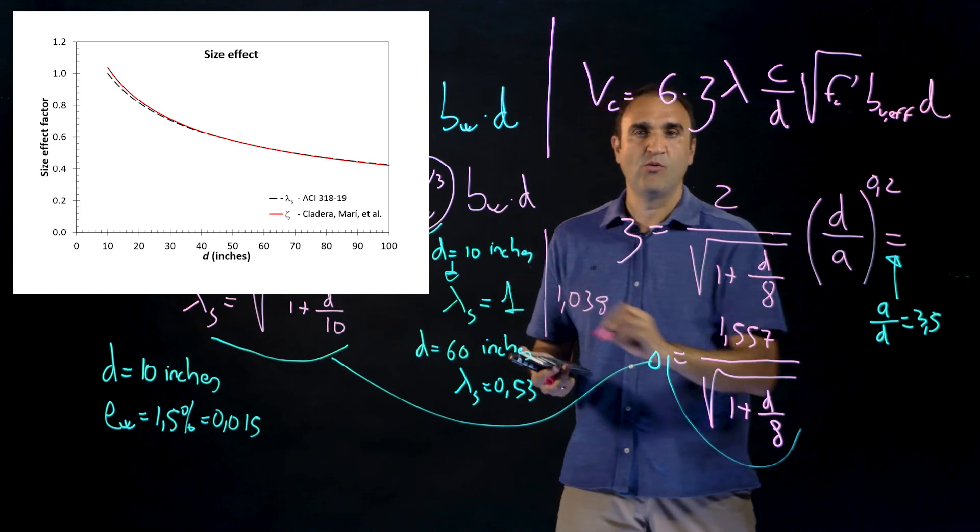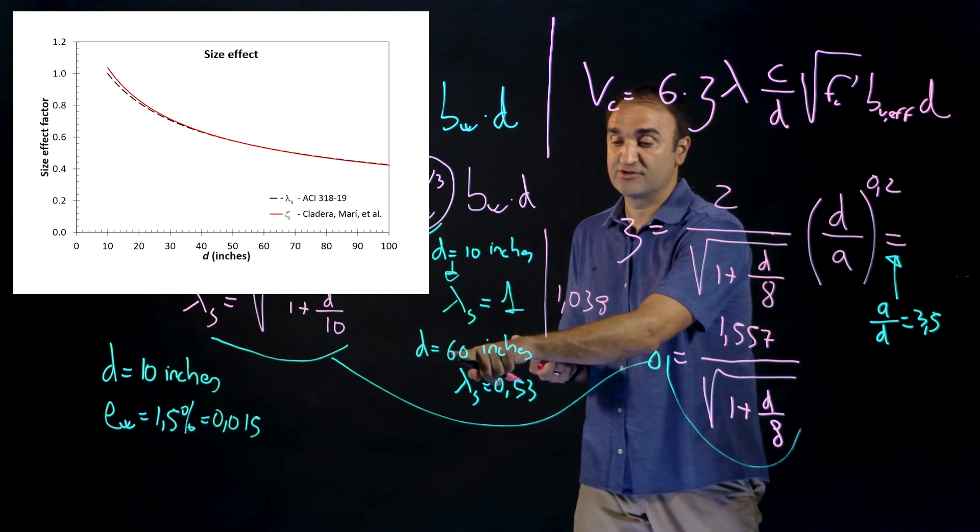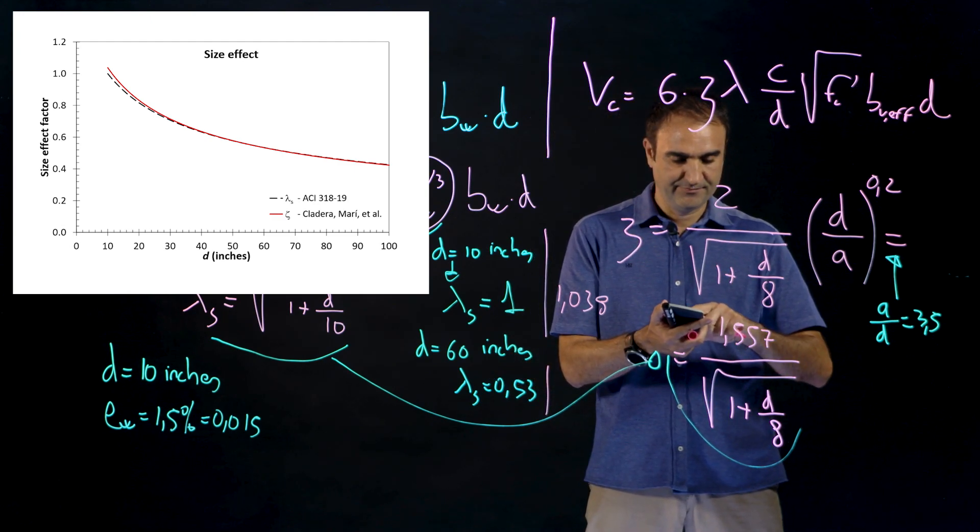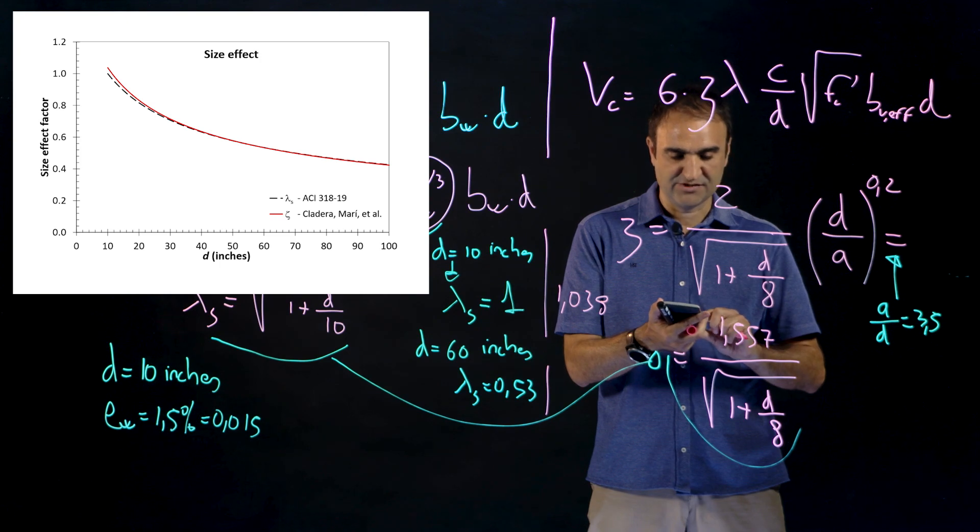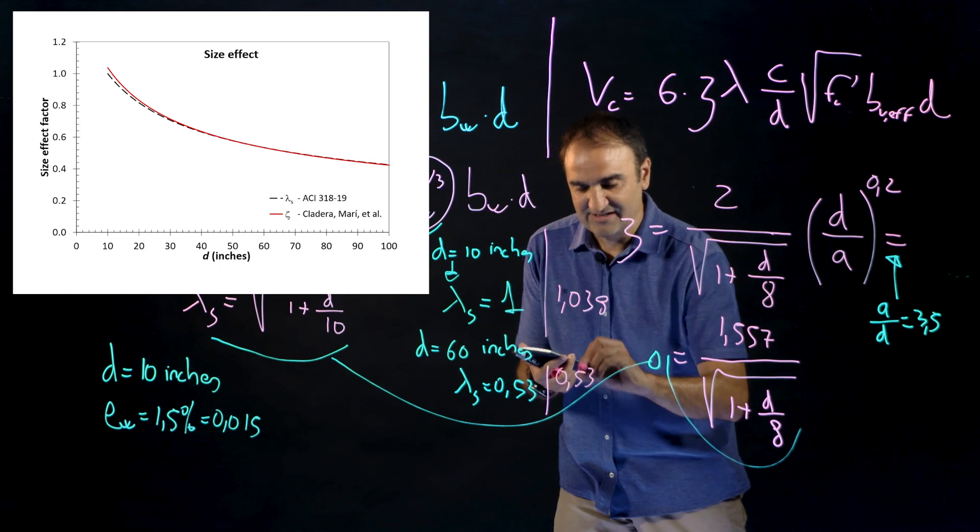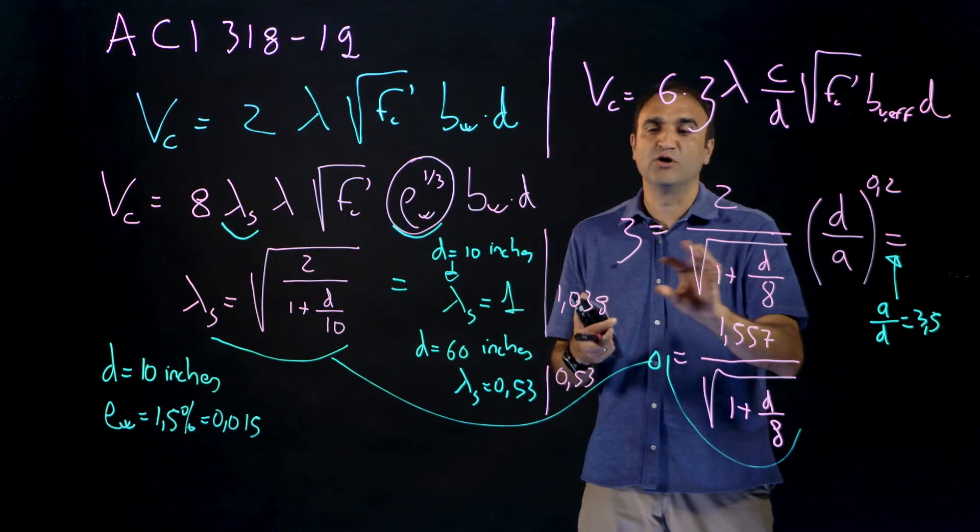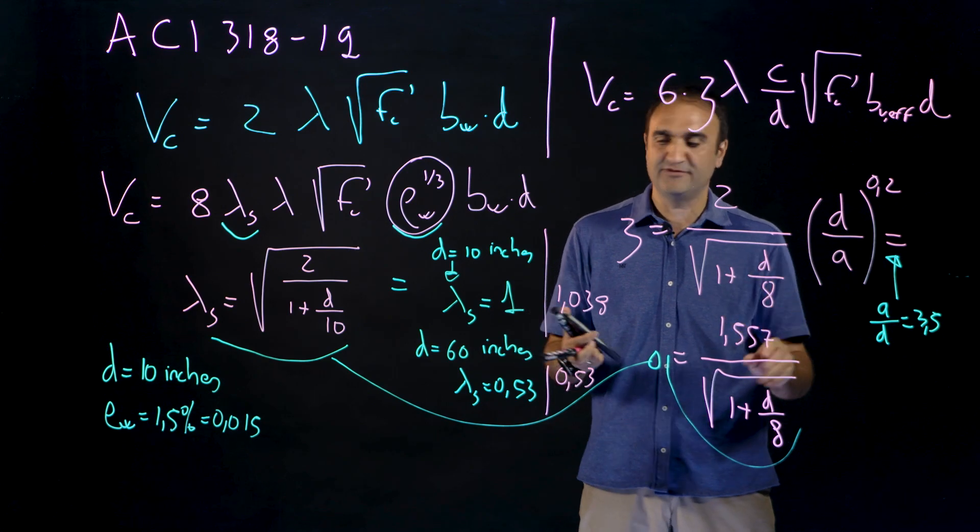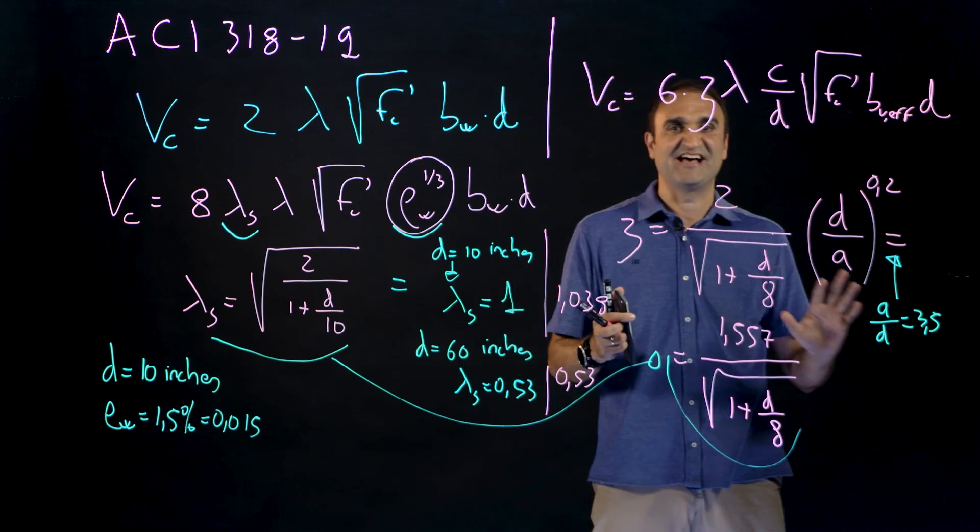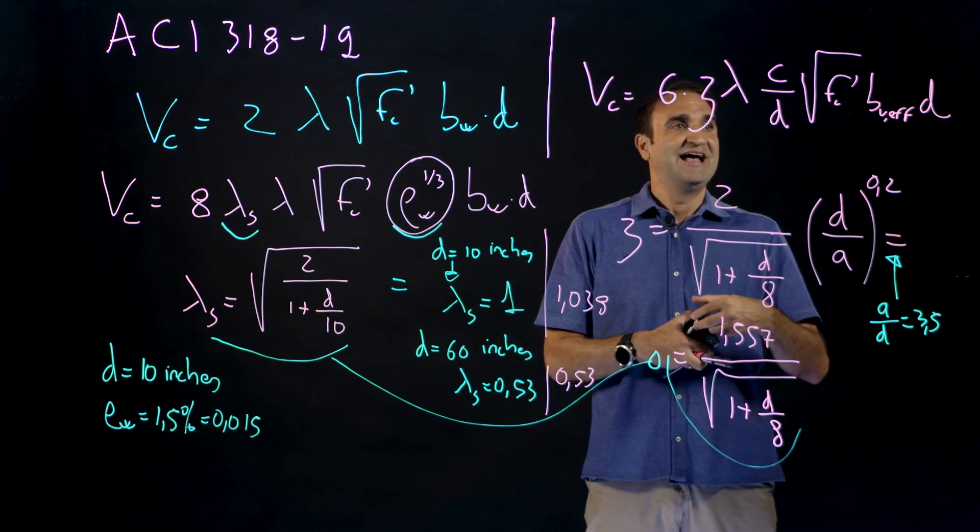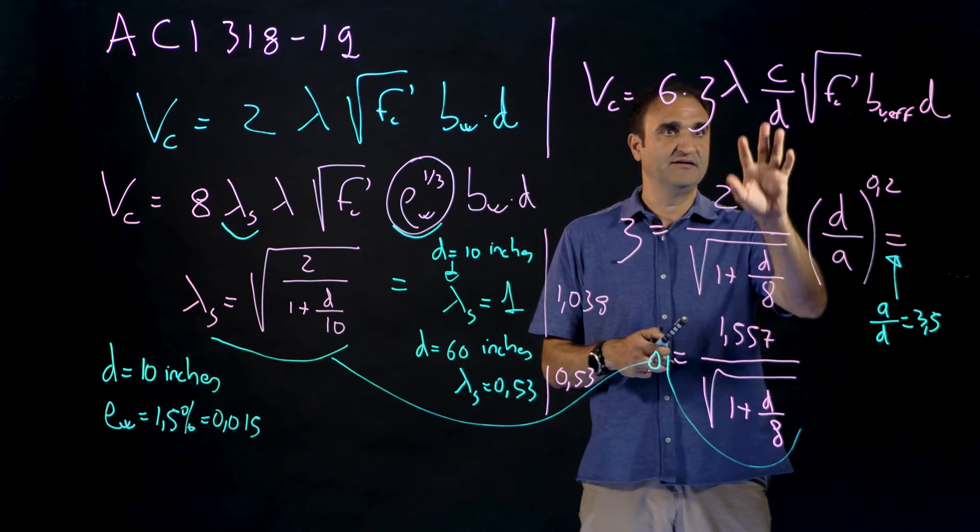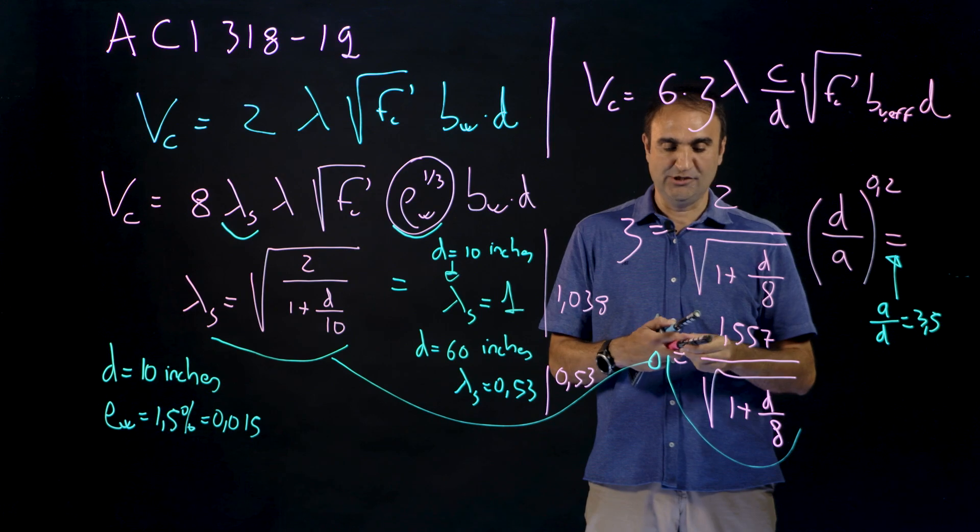So it's only 4 percent difference. For 60 inches if we calculate here this would be, for 60 inches, 0.53 so exactly the same. So for small members there is a four percent difference, for larger beams this equation here and this equation here are just the same. And then we have c over d.